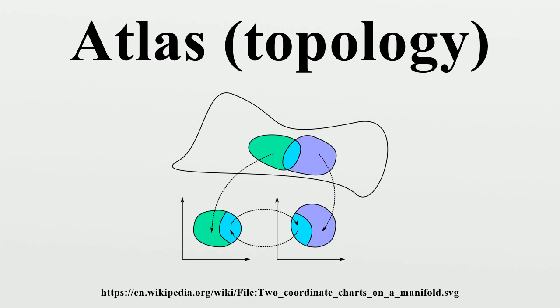A transition map provides a way of comparing two charts of an atlas. To make this comparison, we consider the composition of one chart with the inverse of the other. This composition is not well defined unless we restrict both charts to the intersection of their domains of definition. To be more precise, suppose that two charts for a manifold M are such that the intersection is non-empty. The transition map is defined by noting that since both are homeomorphisms, the transition map is also a homeomorphism.